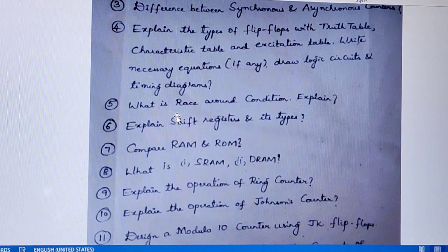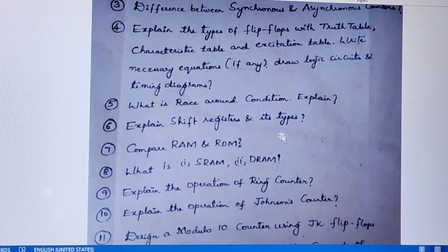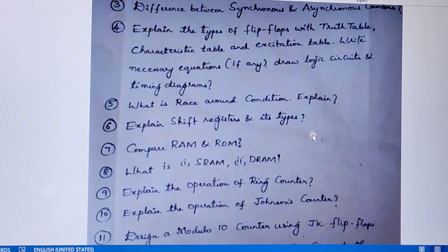Next, what is race around condition? Explain. Sixth question is explain shift registers — we have four different types of shift registers, you have to explain all of them in detail.